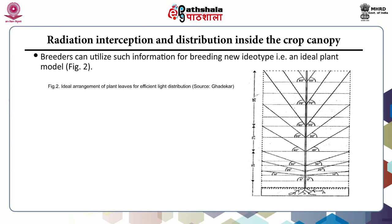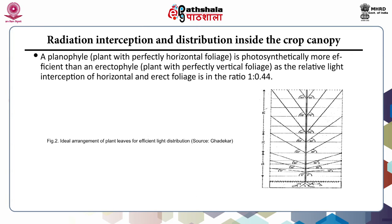Breeders can utilize such information for breeding new ideotypes, that is ideal plant models. The figure shows the ideal arrangement of plant leaves for efficient light distribution at angles from 0 to 80 degrees and the resulting radiation interception. A planophile — a plant with perfectly horizontal foliage — is photosynthetically more efficient than an erectophile — a plant with perfectly vertical foliage — as the relative light interception of horizontal versus erect foliage is in the ratio 1 to 0.44.